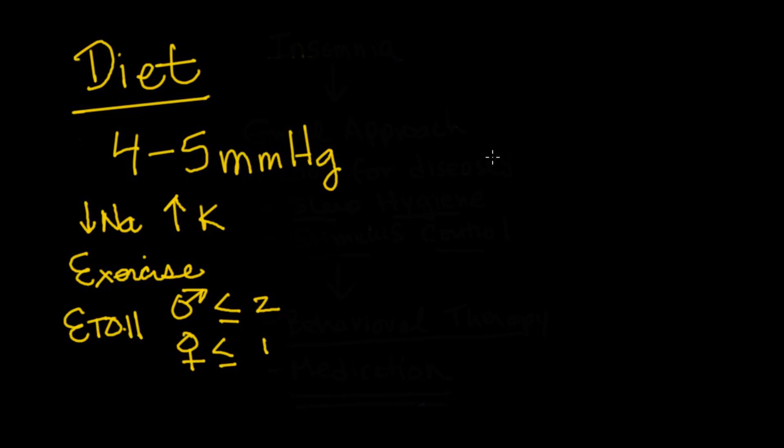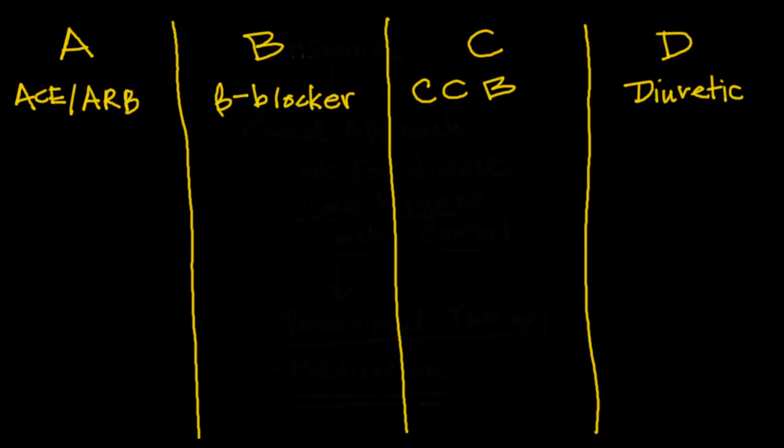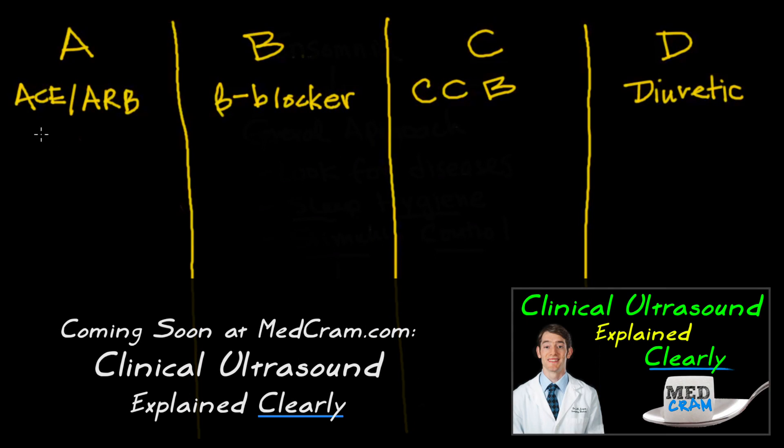But at the same time, what they found was that if you wanted to have an 11 millimeter of mercury drop, decrease sodium intake, decreased saturated fats, increased fruits and vegetables, and increased grains.